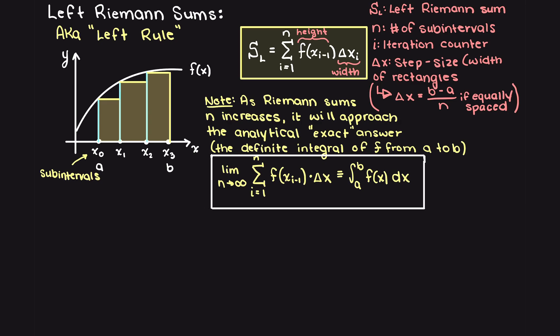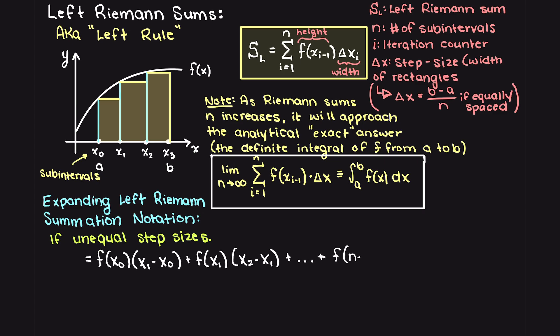I will now write out the equation for left Riemann sums if we have unequal step sizes here. Meaning, if our rectangles are differing in size, we will use this equation.